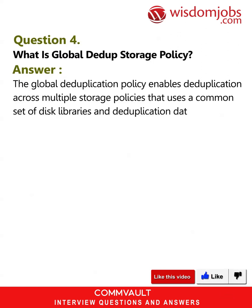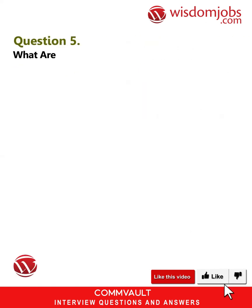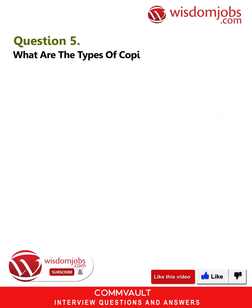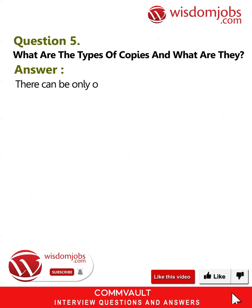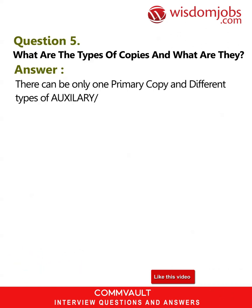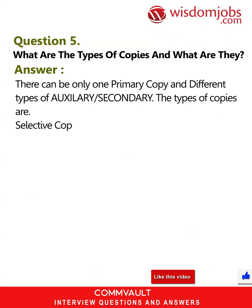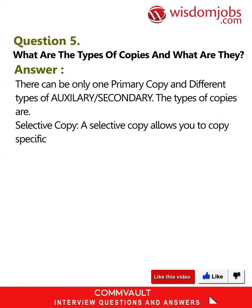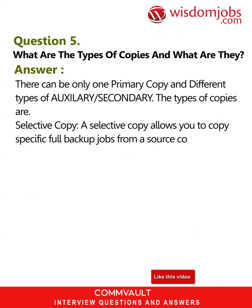Question 5: What are the types of copies and what are they? Answer: There can be only one primary copy and different types of auxiliary or secondary copies. The types of copies are: Selective Copy — a selective copy allows you to copy specific full backup jobs from a source copy. The source copy can be either a primary or a synchronous copy.